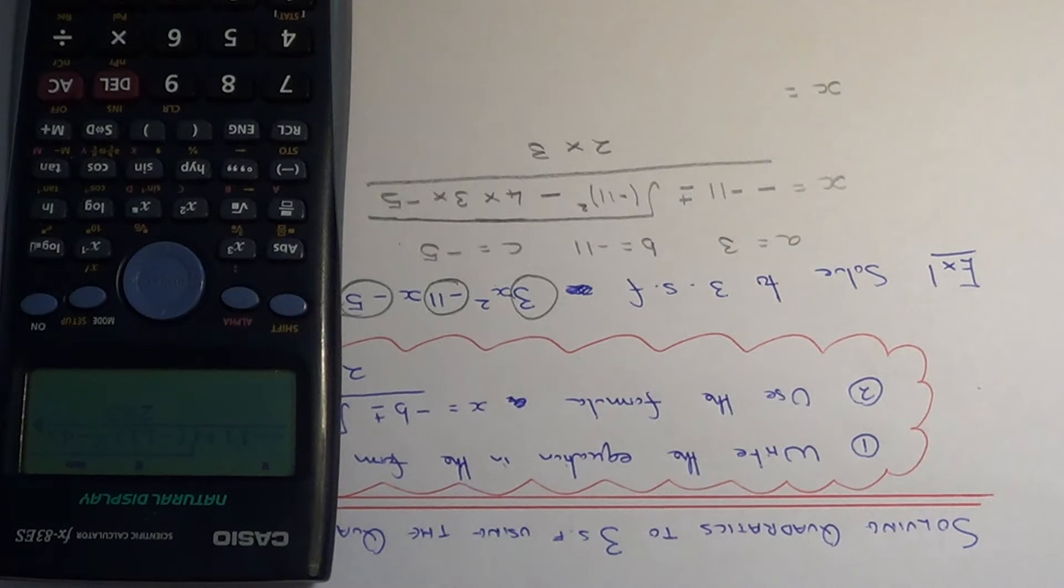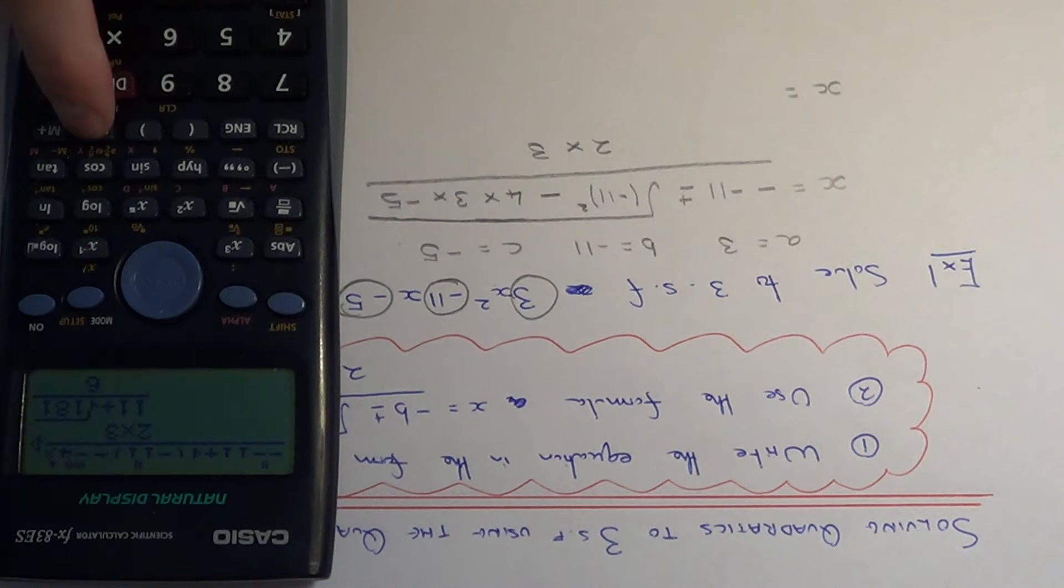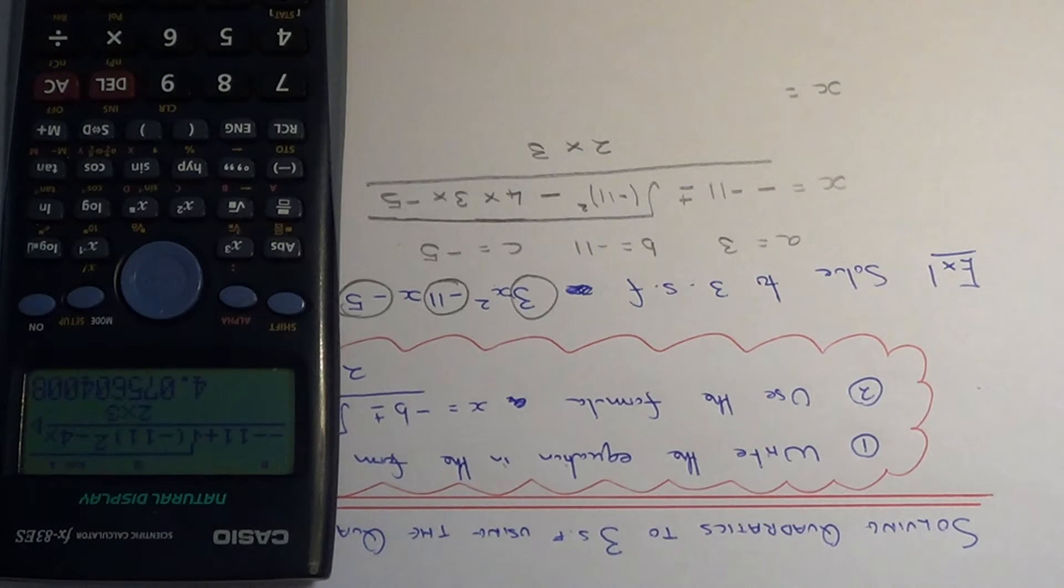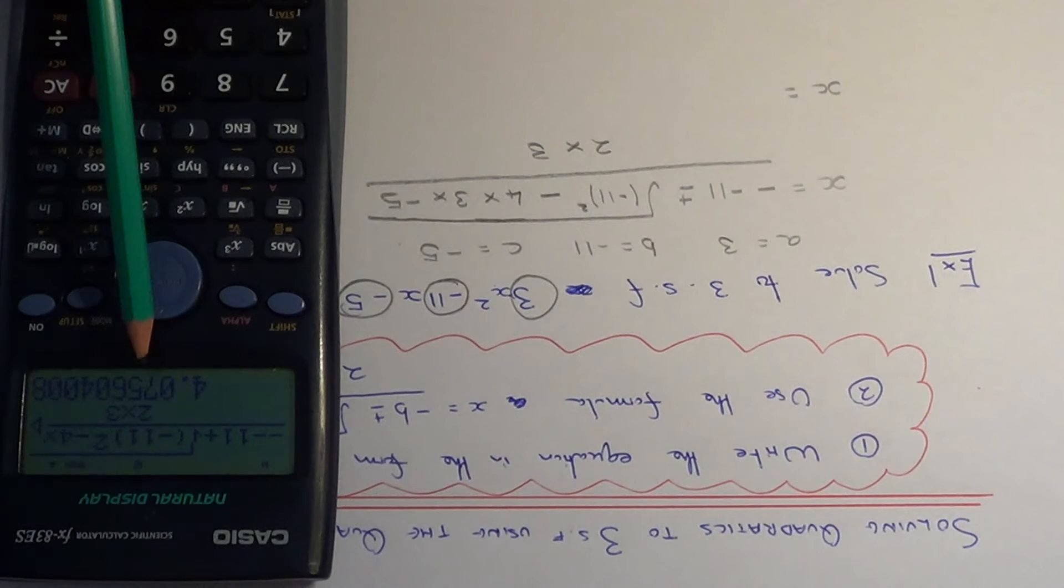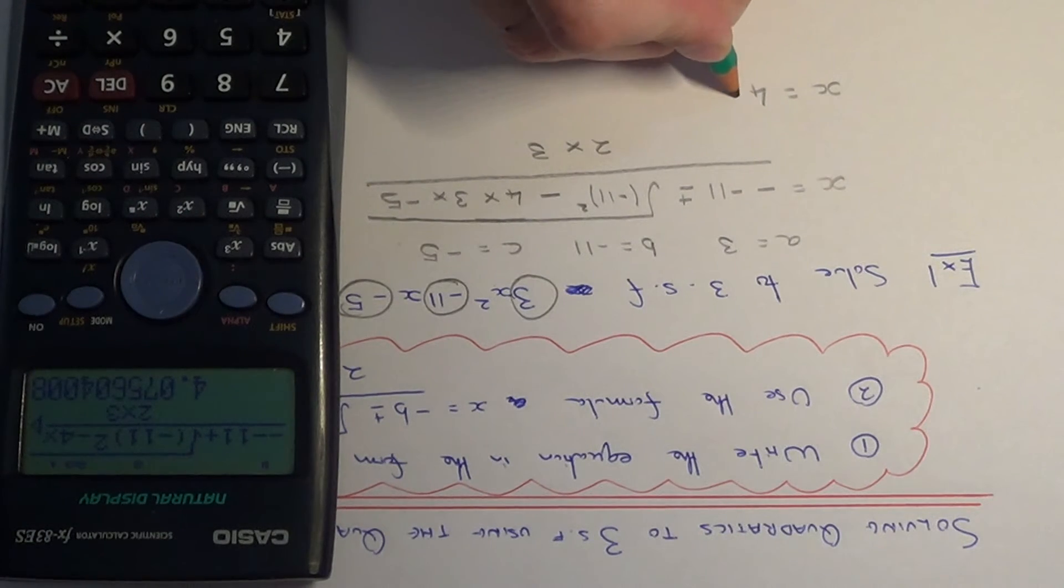If we hit equals, this is our answer here in surd form, but we need our answer to 3 significant figures. If we just round it off, it would be 4.08 to 3 sig figs.